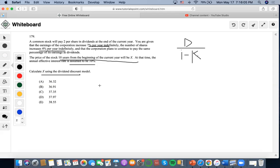So we see here that a common stock will pay $2 per share in dividends, and it's also saying that the earnings would increase by 10% per year.